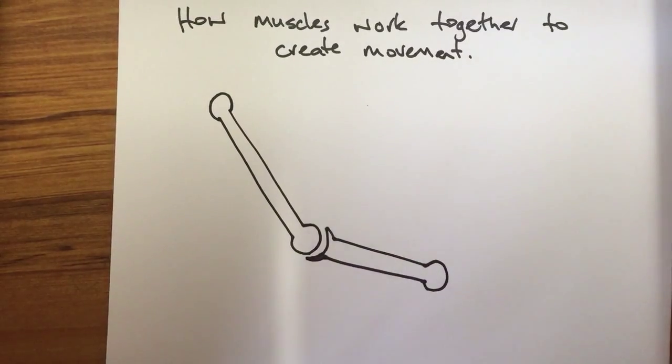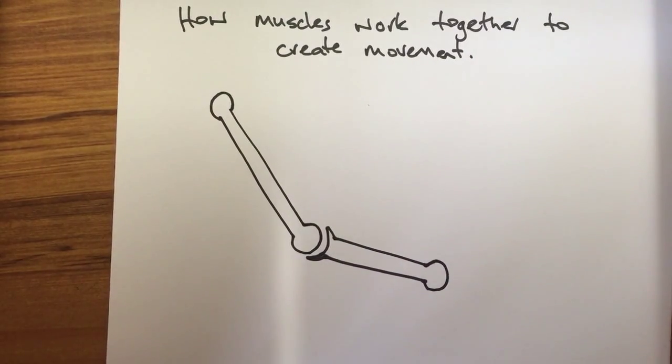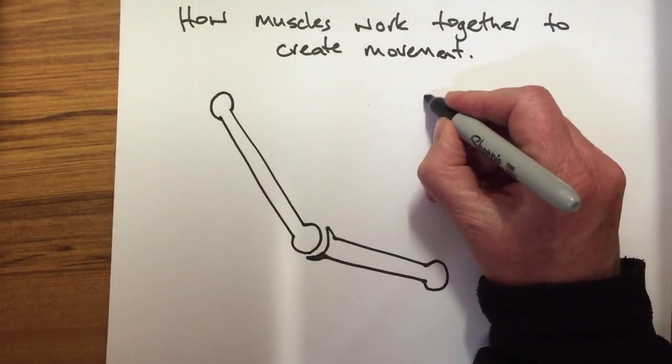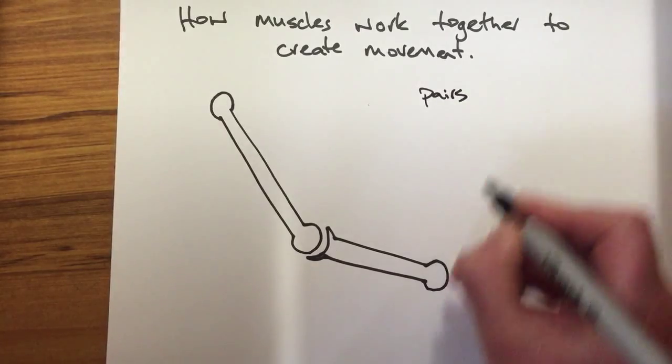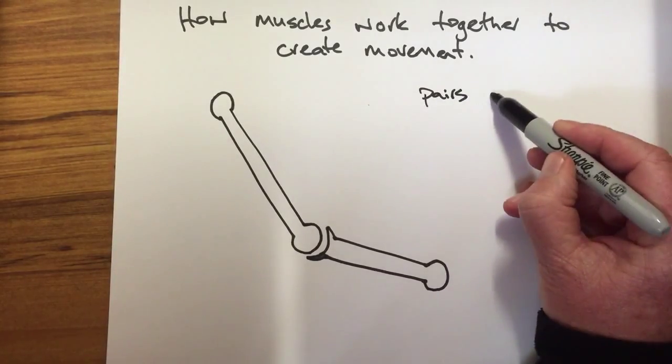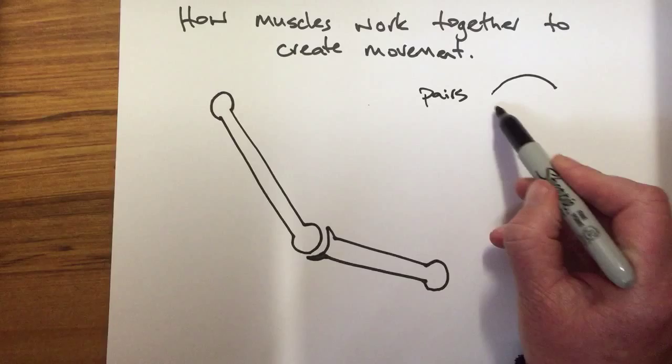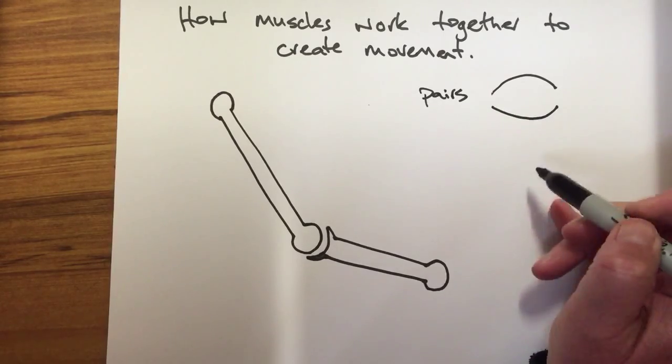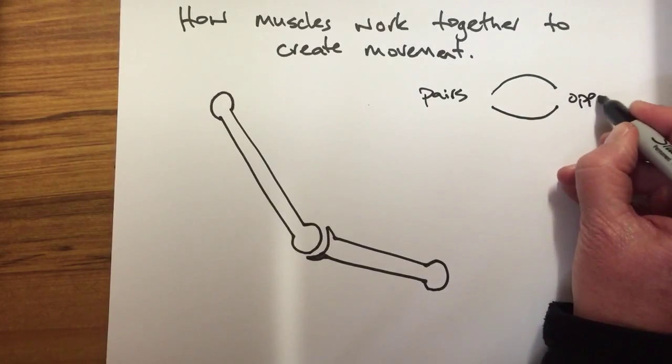Hi girls, I'm going to talk to you about how muscles work together to create movement. The first thing to realize about muscles creating movement is that they work together in pairs. There will be one muscle on one side of the two bones and another muscle on the other, so they're also opposites.